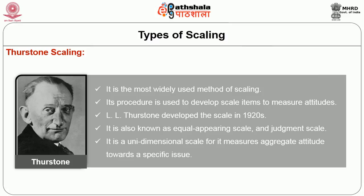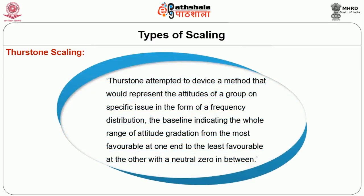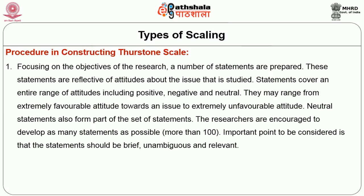Thurston scaling was developed by L.L. Thurston in the 1920s. It is also known as Equal Appearing Scale and Judgment Scale. It is a unidimensional scale because it measures aggregate attitude towards a specific issue. In this scale, Thurston attempted to devise a method that would represent the attitudes of a group on a specific issue in the form of a frequency distribution, with the baseline indicating the whole range of attitude gradation from the most favorable at one end to the least favorable at the other end, with a natural zero in between.